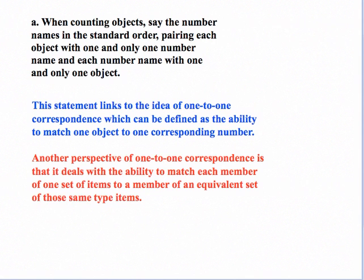Let's start with Part A. It states: When counting objects, say the number names in the standard order, pairing each object with one and only one number name and each number name with one and only one object. This links to the idea of one-to-one correspondence, which can be defined as the ability to match one object to one corresponding number. One-to-one correspondence also deals with matching each member of one set of items to a member of an equivalent set, but here it's simply the idea of matching the object to its corresponding number.